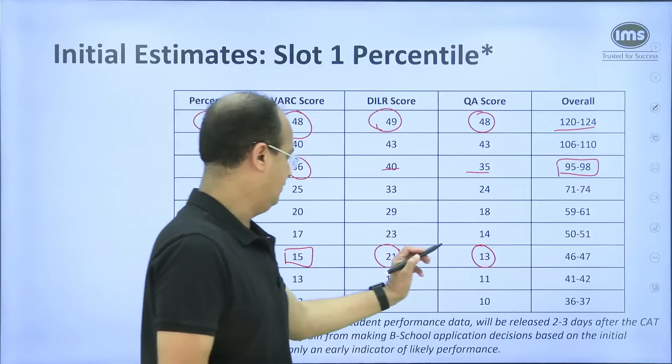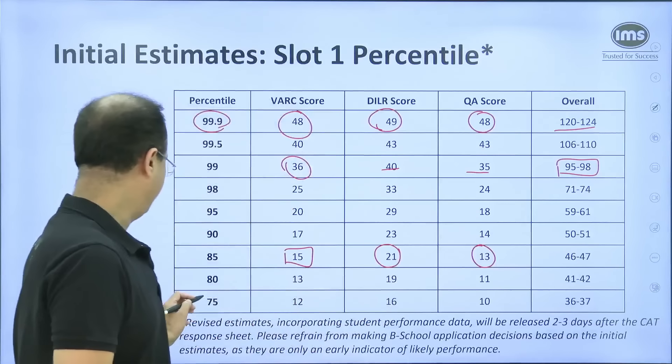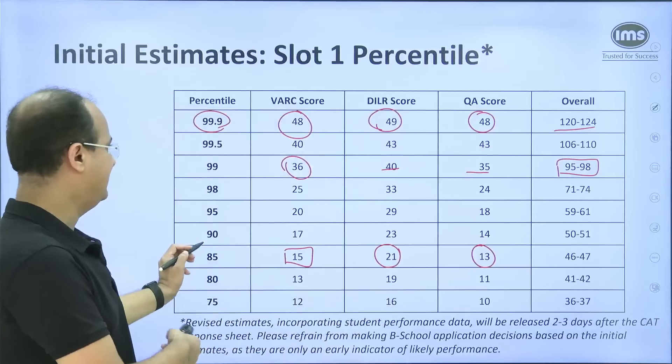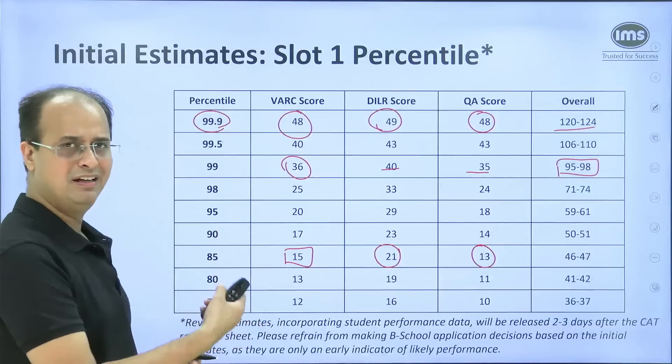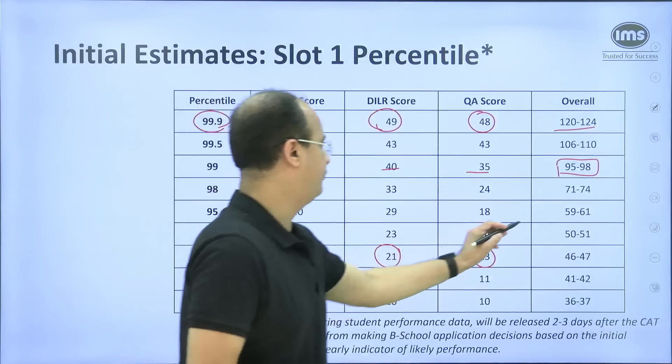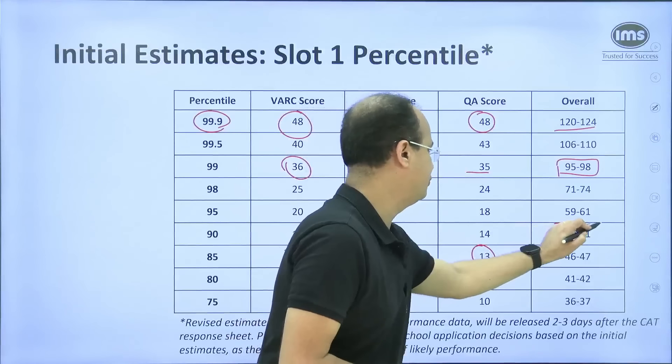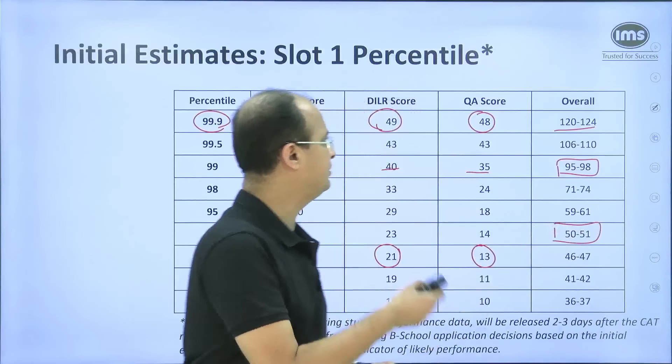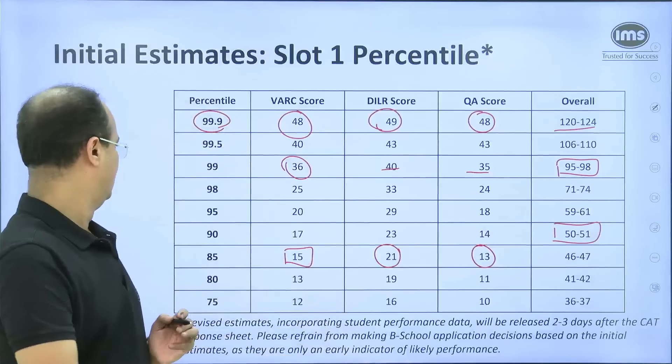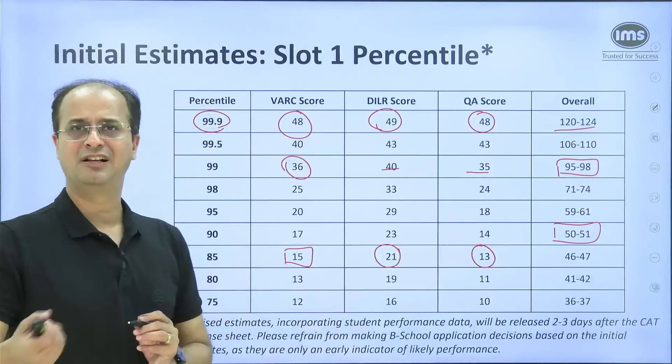Overall, if you are looking at that 90 percentile mark, a score of 50 — a half century in the overall score — is going to take you to that 90 percentile mark.